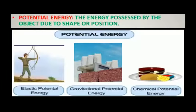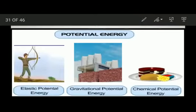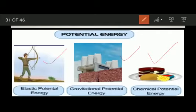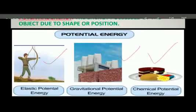Let us take a quick recap of potential energy. Potential energy is the energy possessed by an object due to its shape or position. It is of three types: elastic potential energy, such as a stretched arrow or stretched spring, due to its shape; gravitational potential energy, due to its height; and chemical potential energy, such as in food, due to the chemical composition of the object.